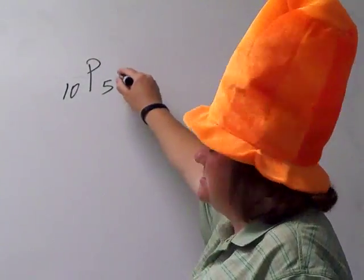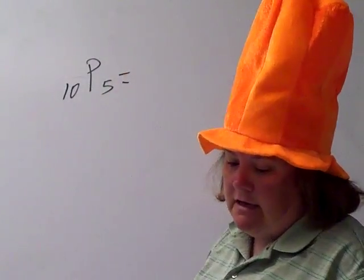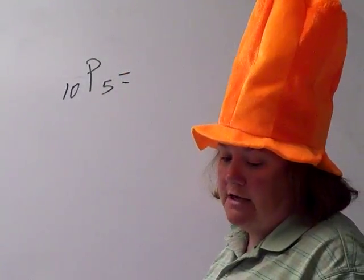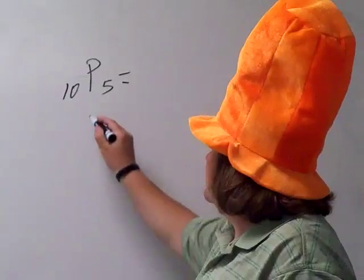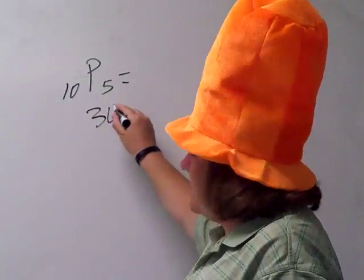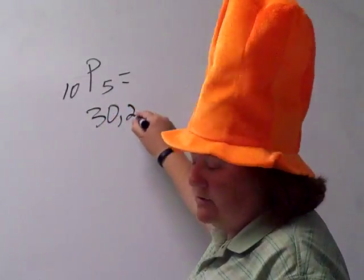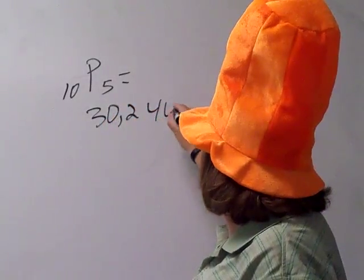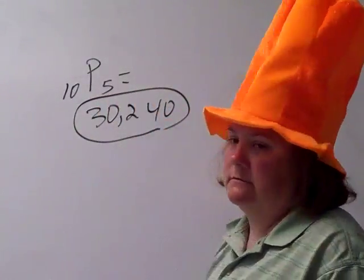So 10 permutations of 5 gives me a lot of arrangements — 30,240 to be exact.